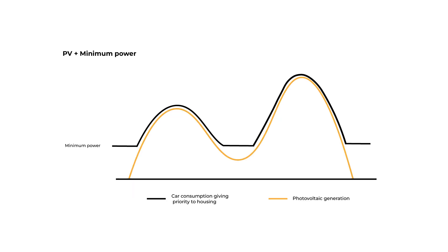First, photovoltaic plus minimum power. The charger gives priority to charging with a solar surplus, and if it's insufficient, it will charge at the contracted minimum power.